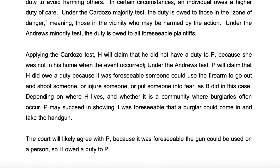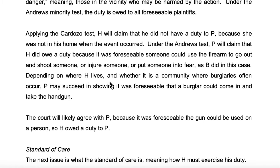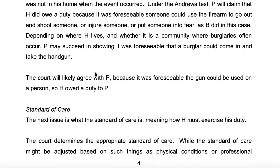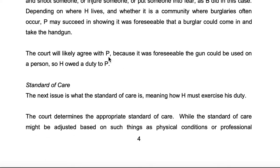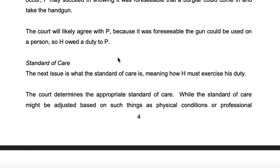Applying the Cardozo test, H will claim that he did not have a duty to P because she was not in his home when the event occurred. Under the Andrews test, P will claim that H did owe a duty because it was foreseeable someone could use the firearm to injure someone or put someone in fear, as B did in this case. Depending on where H lives and whether it is a community where burglaries often occur, P may succeed in showing it was foreseeable that a burglar could come in and take a handgun. The court will likely agree with P because it was foreseeable the gun could be used on a person, so H owed a duty to P.